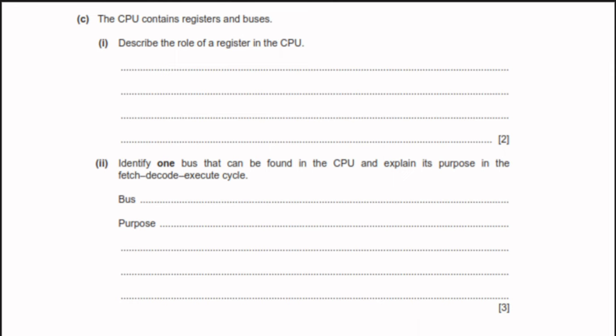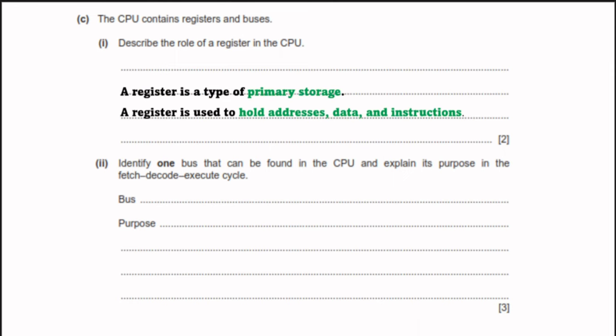Describe the role of a register in the CPU. A register is a type of primary storage used to hold addresses, data, and instructions. We have different types of registers in the CPU that hold different types of data — addresses, instructions, and data — allowing information to be stored temporarily inside the register.